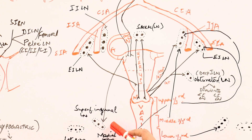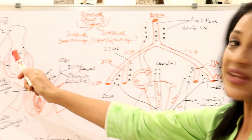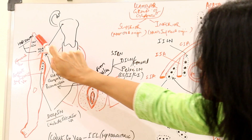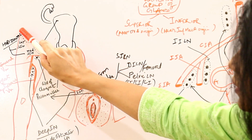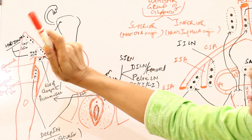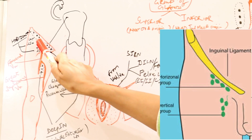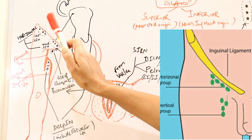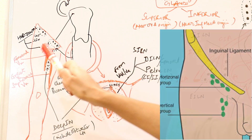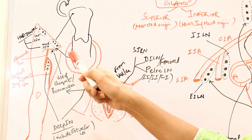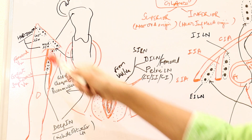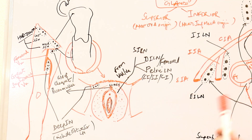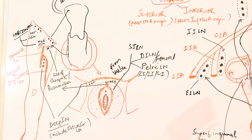The superficial inguinal lymph nodes have medial and lateral groups, as you can see in this diagram. Below the inguinal ligament — the anterior iliac spine — the superficial inguinal lymph nodes are easily palpable. If there is any infection or external genitalia cancer, these lymph nodes become palpable. The rest of the lymph nodes are not palpable and are detected only by biopsy, CT scan, or MRI.